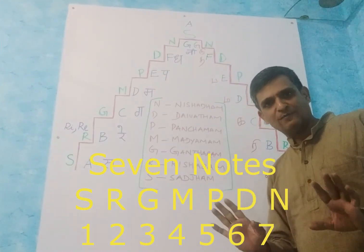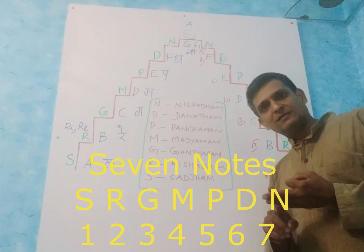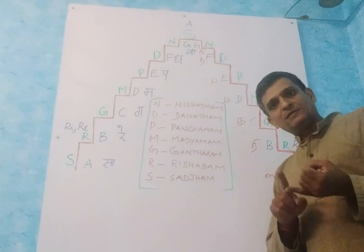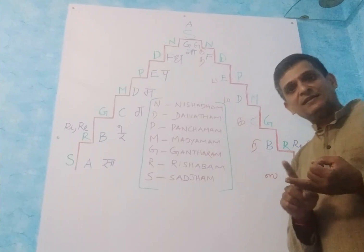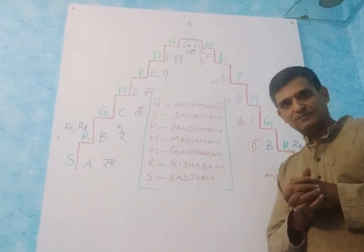Sa is 1, Re is 2, Ga is 3, Ma is 4, Pa is 5, Da is 6, Ni is 7. These are the seven notes.